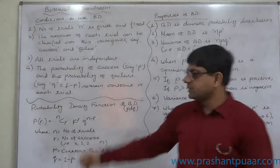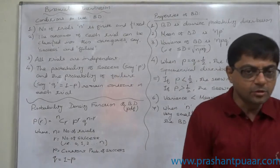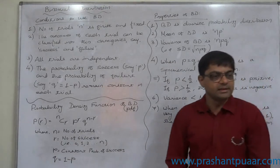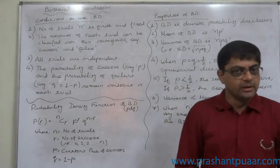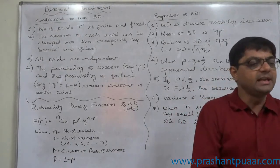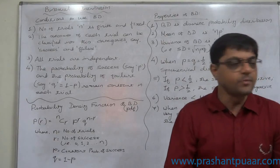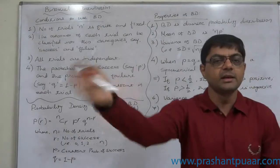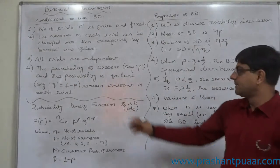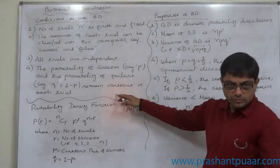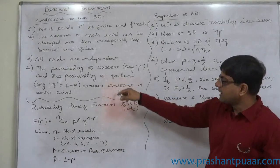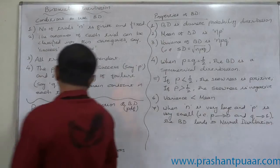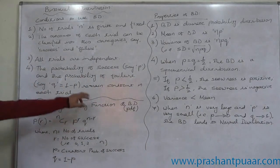Let us take the example of tossing a coin. If we toss a coin the first time, the probability of getting head as well as tail is 1/2. If that same coin is tossed a second time, again the probability of head and tail remains 1/2. In the third, fourth, and eighth trial, the probability remains 1/2. Similarly, in all trials of any binomial experiment, the probability of success as well as failure remains constant.